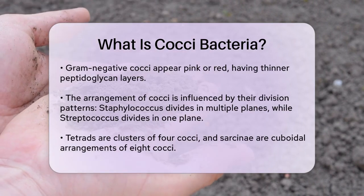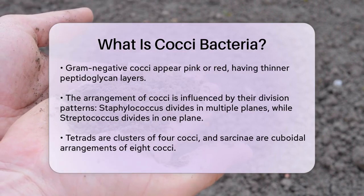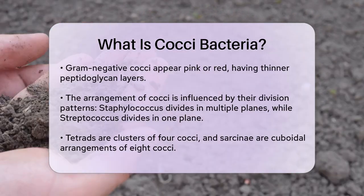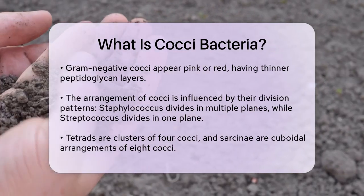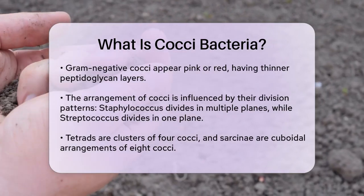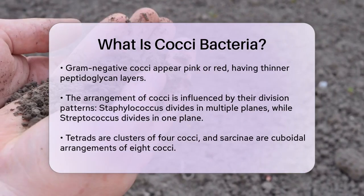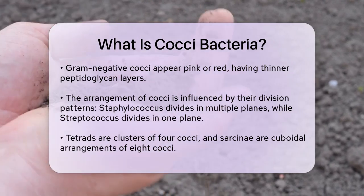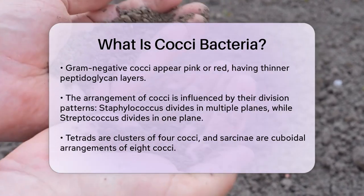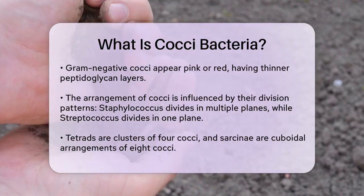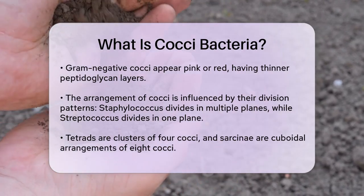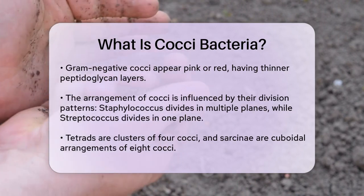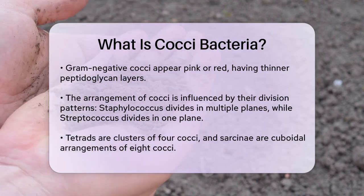The way these bacteria divide and stick together determines their arrangement. For example, Staphylococcus species divide in multiple planes, resulting in irregular clusters, while Streptococcus species divide in one plane, forming chains.